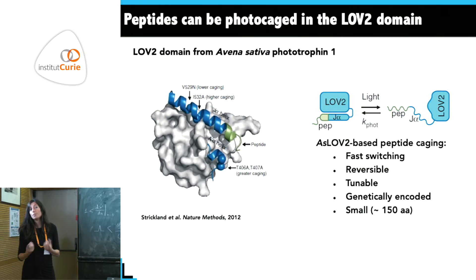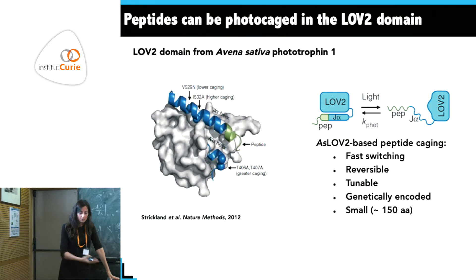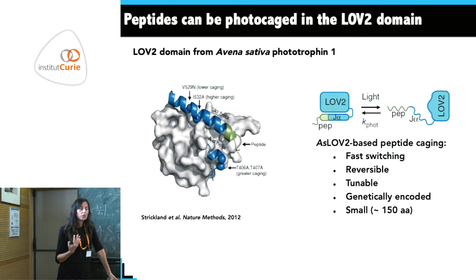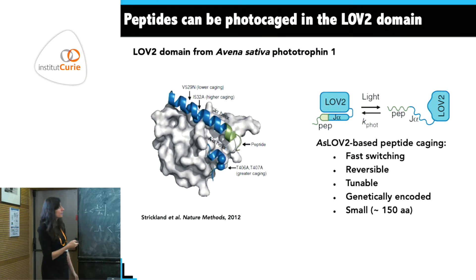This chromophore is produced by any cell type, which is an advantage. For cell culture you can introduce the chromophore into the medium and the cells will take it up, so non-endogenous chromophores are also possible. However, when you move to animals like zebrafish or mice, it is no longer practical to deliver the chromophore externally.